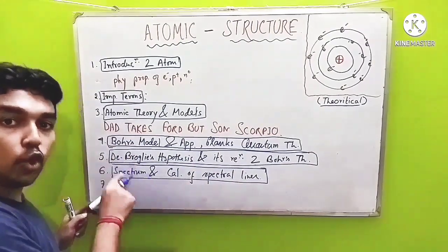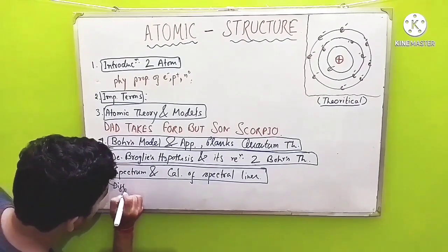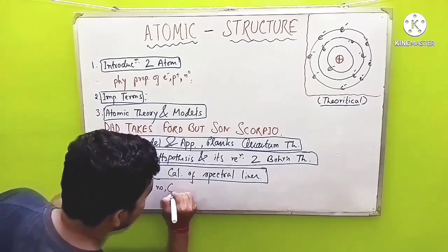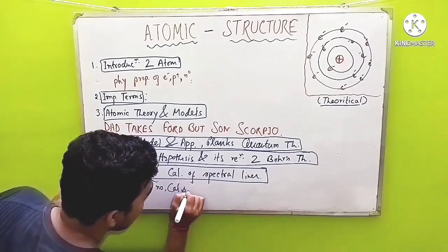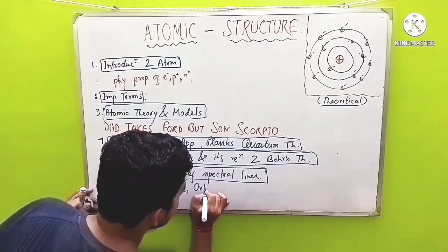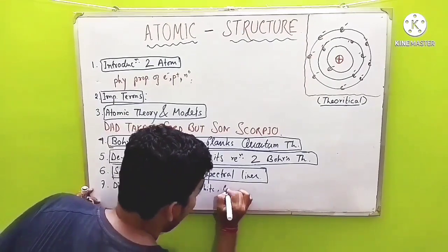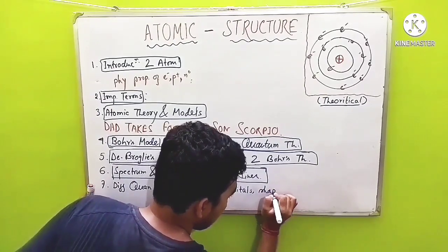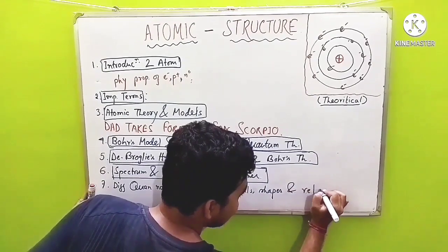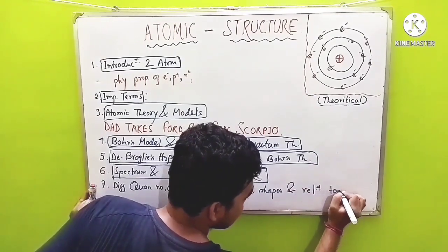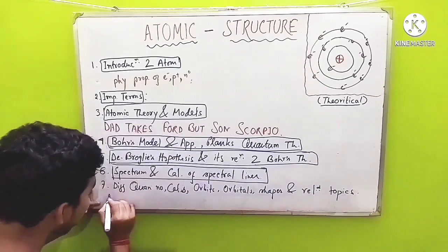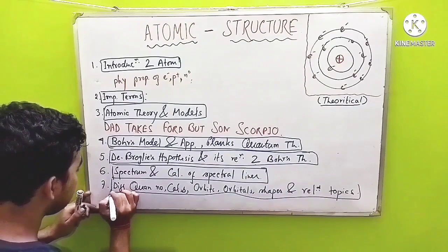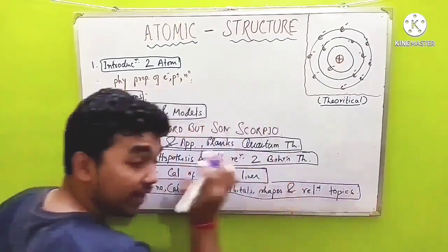After this, number seven — you will get to know about different quantum numbers, their calculations, orbits, orbitals, their shapes, and related topics. Questions from this part are also very popular in the exam.